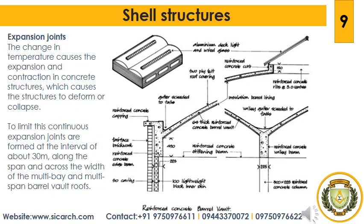The change in temperature causes expansion and contraction in concrete structures, which can cause the structure to deform or collapse. To limit this, continuous expansion joints are formed at intervals of about 30 meters along the span and across the width of the multi-bay and multi-span barrel vault roof. Longitudinal expansion joints are formed in an upstand valley.